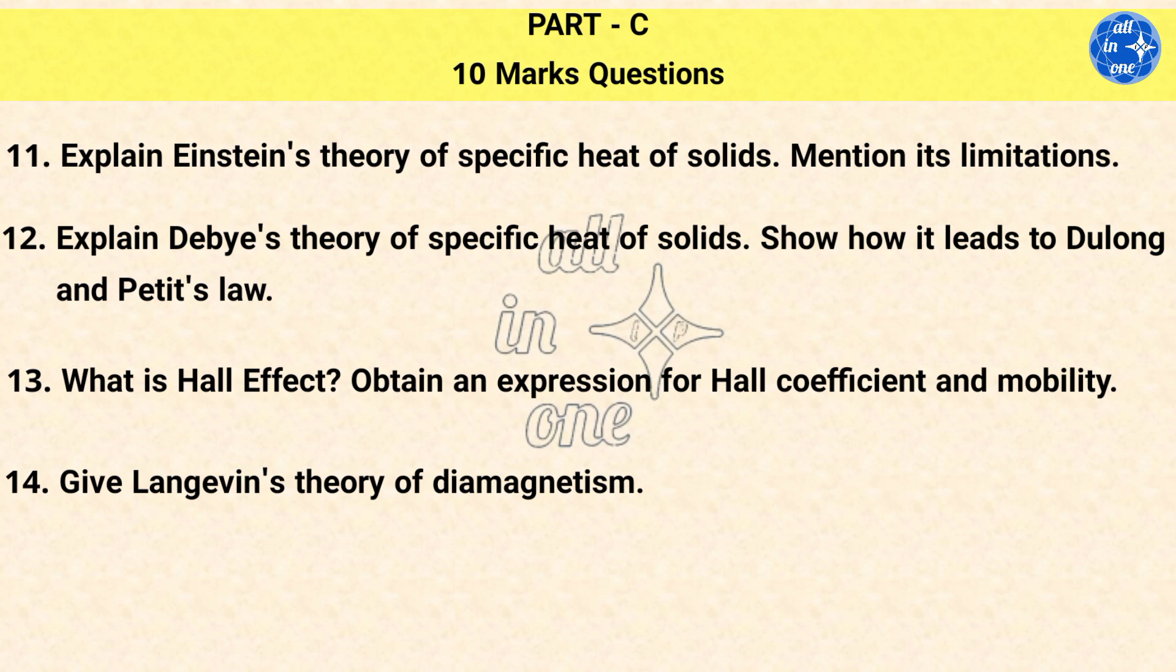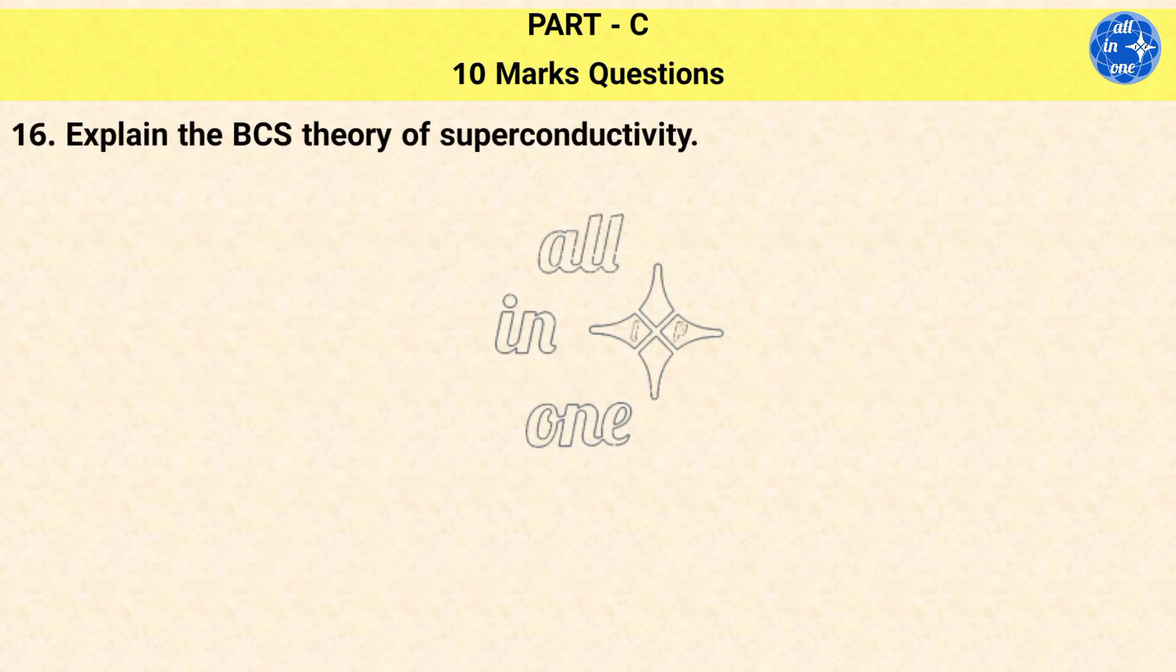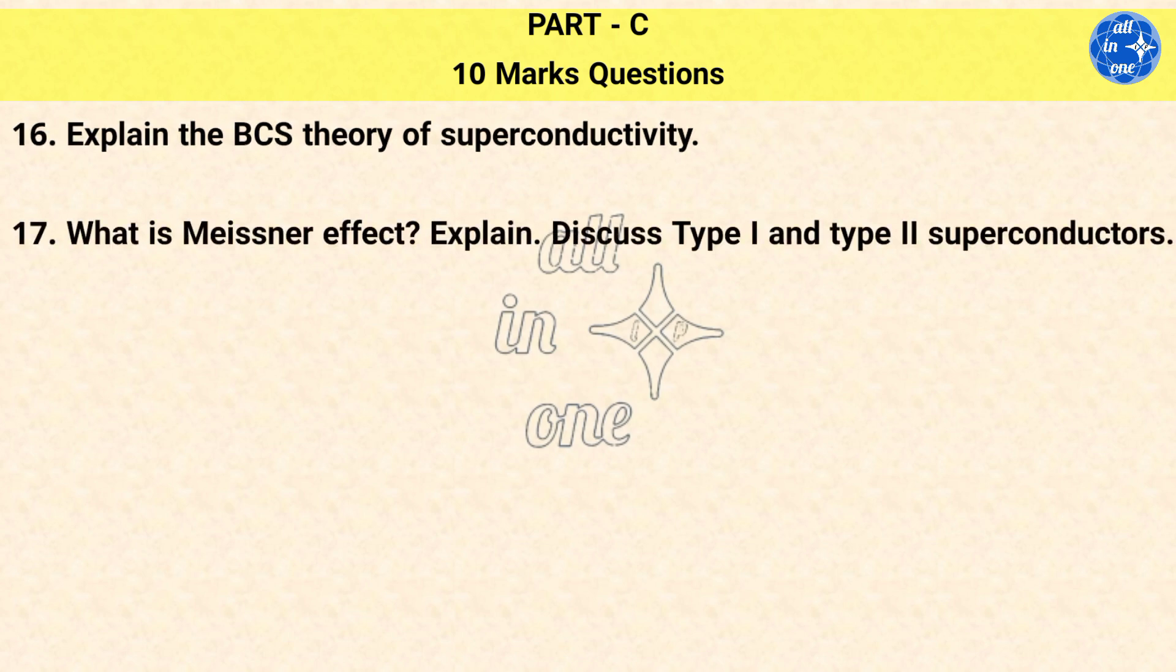Question 15: Give Langevin's theory of diamagnetism. Question 16: Give Langevin's theory of paramagnetism. Mention its drawbacks. Question 17: Explain the BCS theory of superconductivity. Question 18: What is Meissner effect? Explain. Discuss Type 1 and Type 2 superconductors.